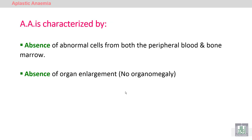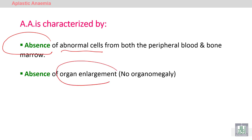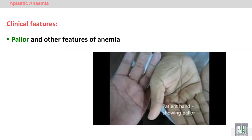Aplastic anemia is characterized by absence of abnormal cells, because it is not a malignancy. It is due to failure of the bone marrow, so there is absence of malignant cells from the peripheral blood or bone marrow, and also absence of organ enlargement. It is failure of the bone marrow or failure of the stem cell to produce normal blood cells.